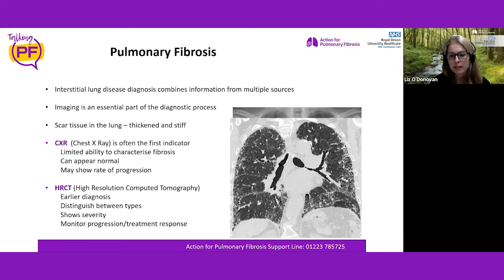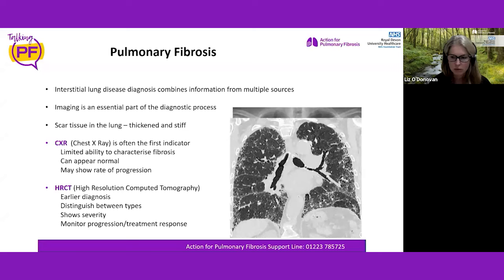On this patient's CT scan, the wispy lines seen in the chest X-ray are much more defined. We can see lots of lines and irregularity, and almost see airways at the edges getting dragged apart, showing how much better CT is for characterisation.